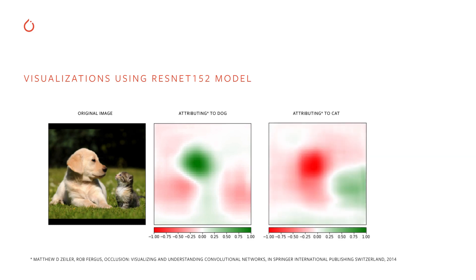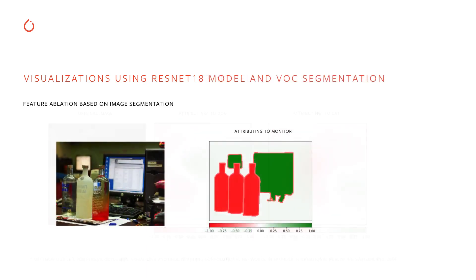When we attribute to the cat class, the pixels corresponding to the dog turn red because they pull away from the cat class, and the pixels on the cat turn green — those are important pixels for predicting cat. We can also perform feature ablation based on image segmentation. In this example, we segmented the image into three segments — bottles, monitors, and the background — constructed a feature mask based on those segments, and attributed to the monitor class. The background is neutral, bottles pull away from the monitor class, and pixels on the monitors are very important for predicting the monitor.